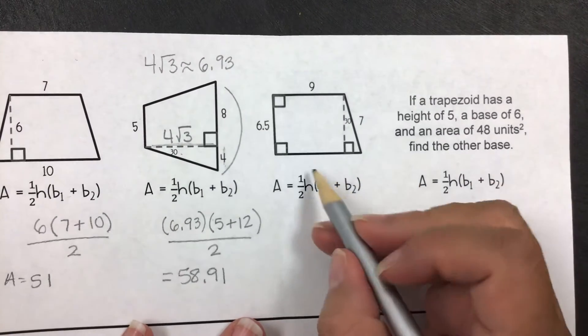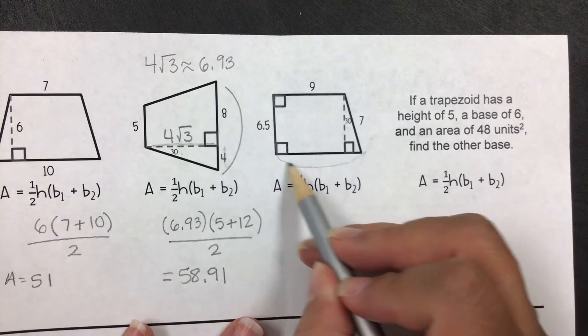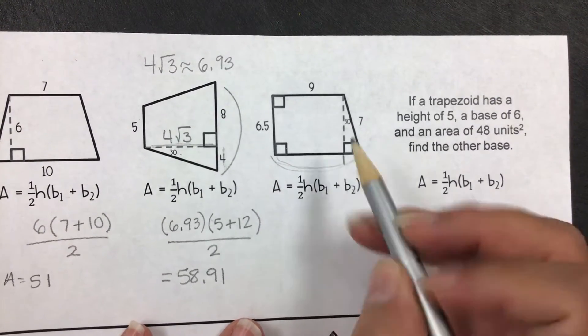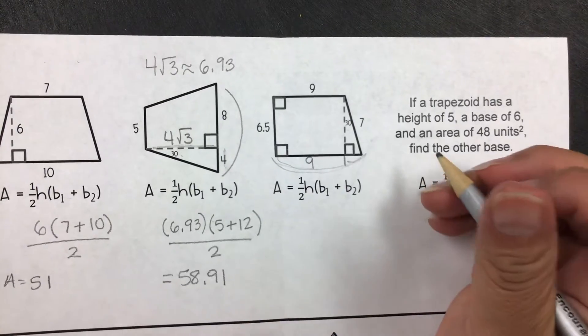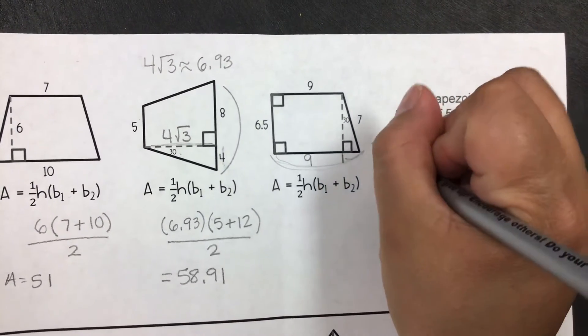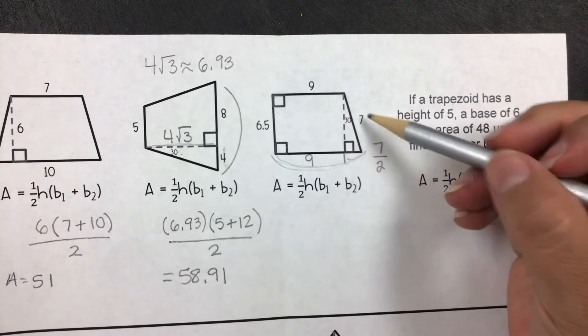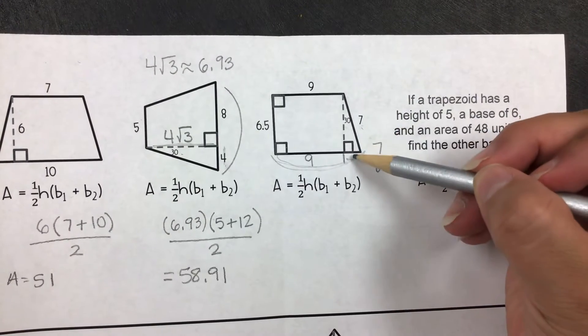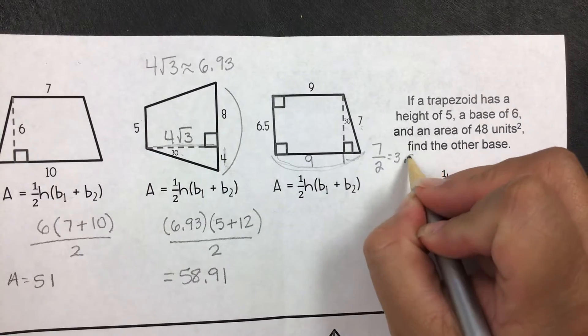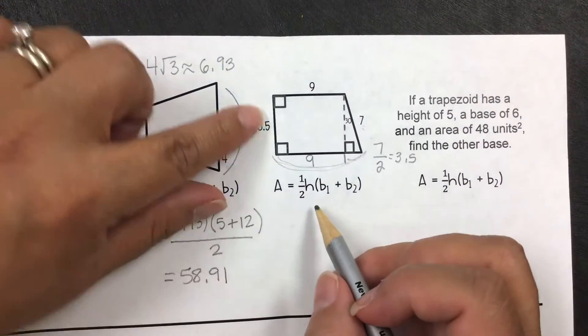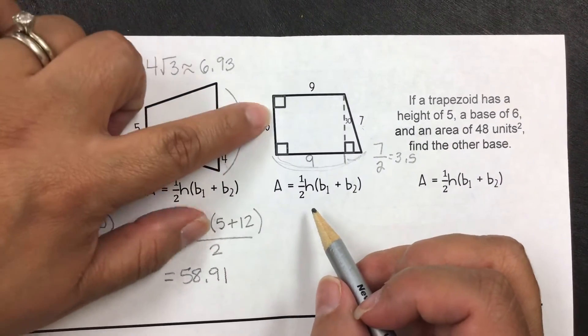For this one, what we need is this whole base right here. We already know that this part right here is 9, so we're missing this piece right here. How do we get it? We need to take 7 and divide it by 2. That's the ratio. We take the hypotenuse and divide by 2 to get the short leg, which is 3.5.